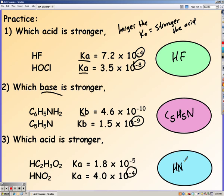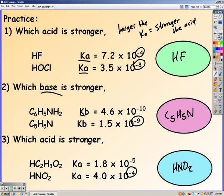And number 3, negative 4 is bigger than negative 5, so nitrous acid is stronger than acetic acid. Notice all of these are weak though.